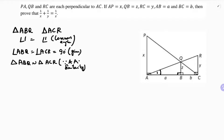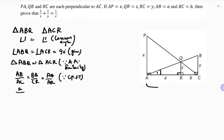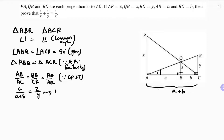Since the triangles are similar, their sides are proportional: AB/AC = BQ/CR = AQ/AR. Substituting values: AB is a, AC is a+b, BQ is z, and CR is y. The remaining values we don't have, so we leave those. This gives us equation one.